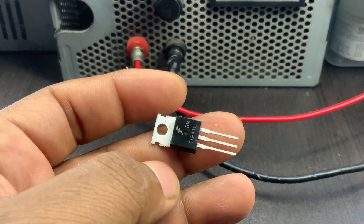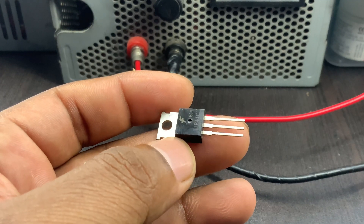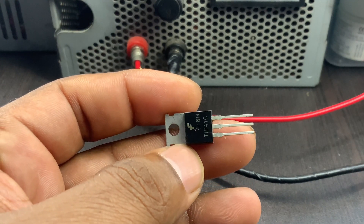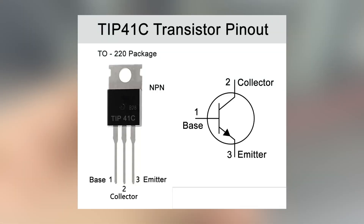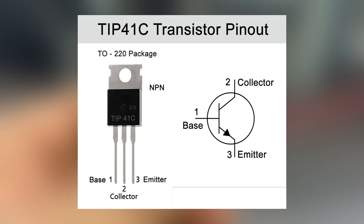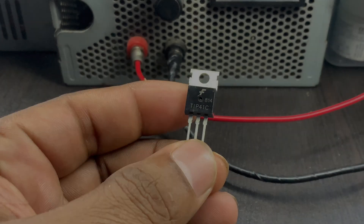Transistor type: the TIP41C is an NPN transistor, which means it is made up of three semiconductor layers — a negatively doped layer sandwiched between two positively doped layers.